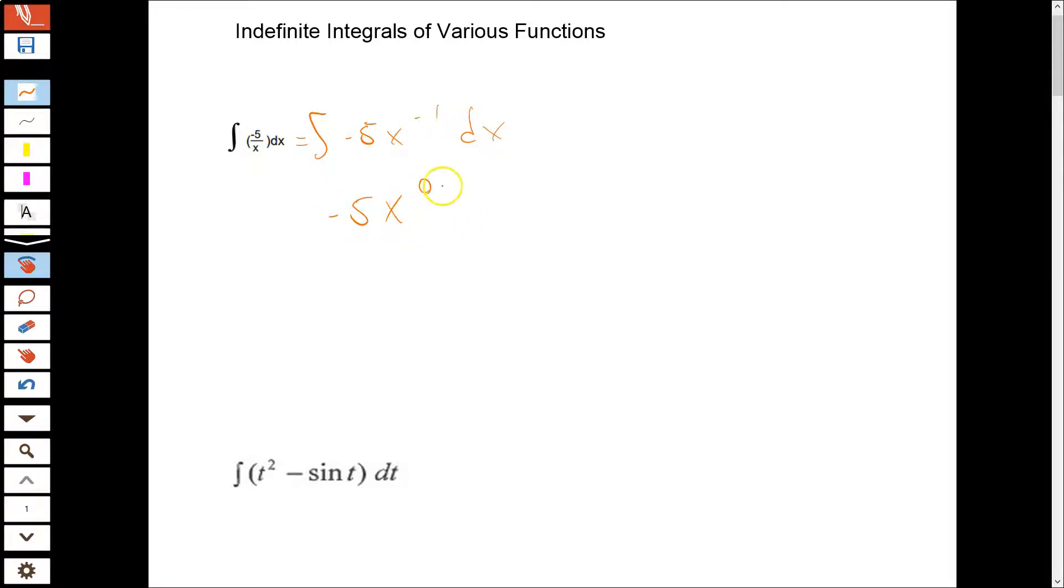This feels weird because x to the zero is one, so this would just be like negative five. And we know that the derivative of a constant is zero. So we know that the derivative of this particular result is not equal to negative five over x. We're always going to check on these to make sure that the derivative of our result is equal to our integrand. And in this case, this check step tells me that this is wrong.